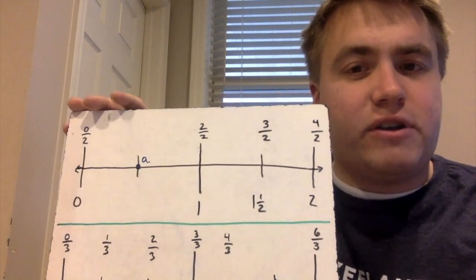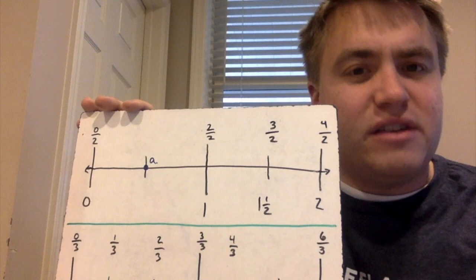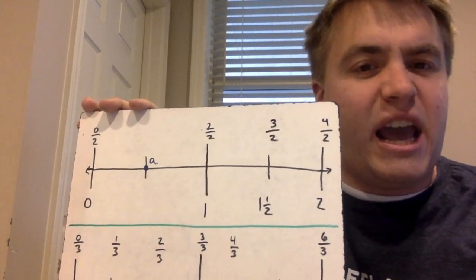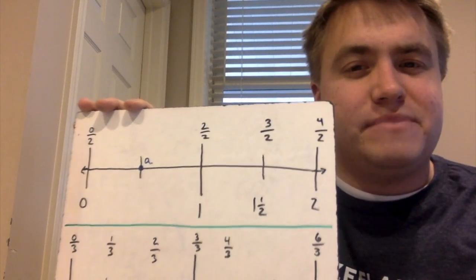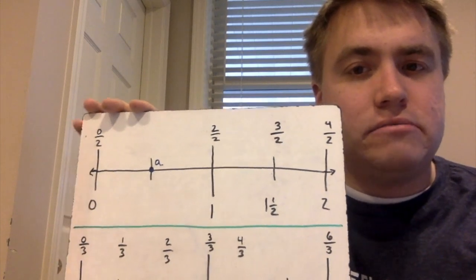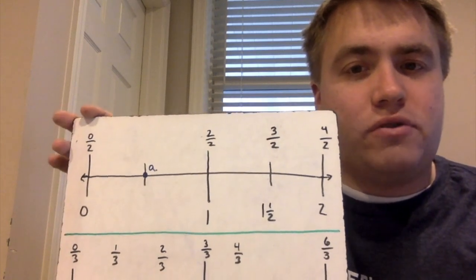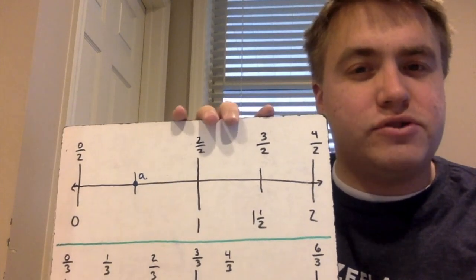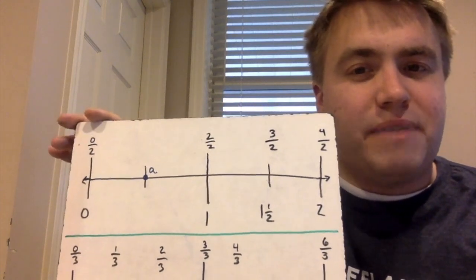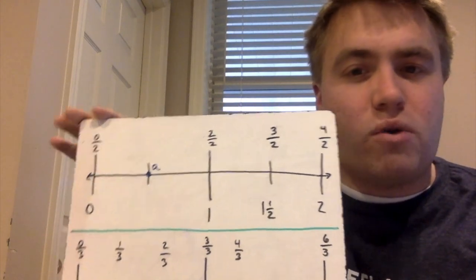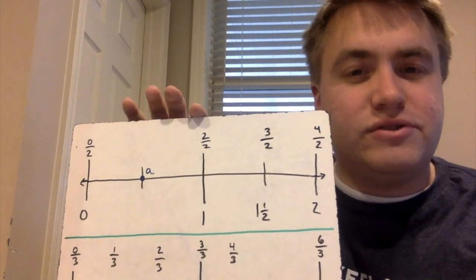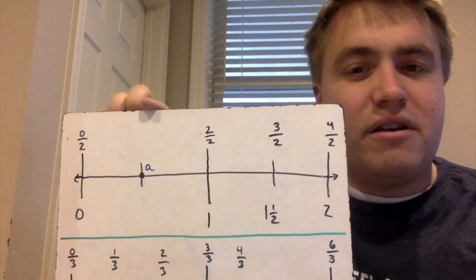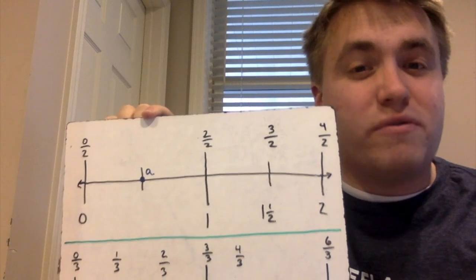I want you guys to try to figure out, using a pattern — because this is all focused on the patterns — what point A equals. Think for a second. If I have zero-over-two, missing number, two-over-two, three-over-two, and four-over-two, I'm basically just counting the numerators: zero, one, two, three, and four. That means the missing number right here would be one-over-two.